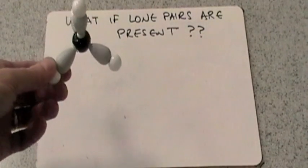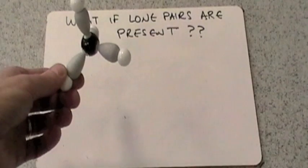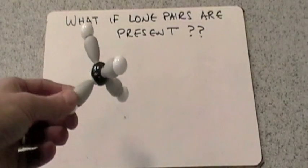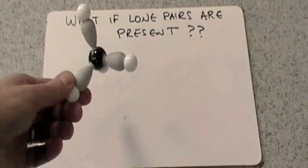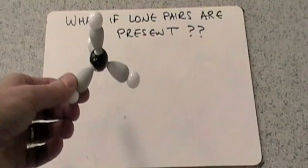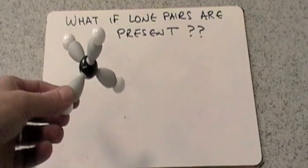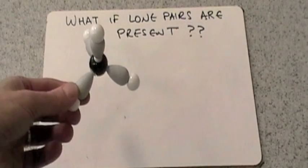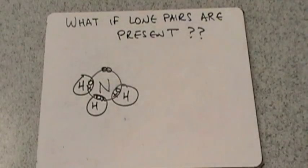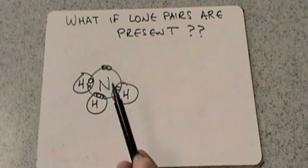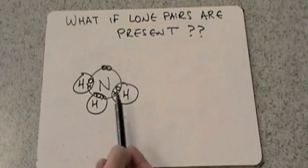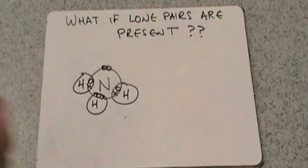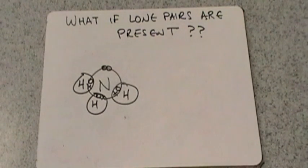Now we're going to change the molecule and look at ammonia, because ammonia has some similarities to methane but it also has a lone pair present. Here's the dot-and-cross diagram for the ammonia molecule. We have the central nitrogen atom — remember nitrogen is in group five, so it has five electrons — and hydrogen only has one electron, shown as crosses.